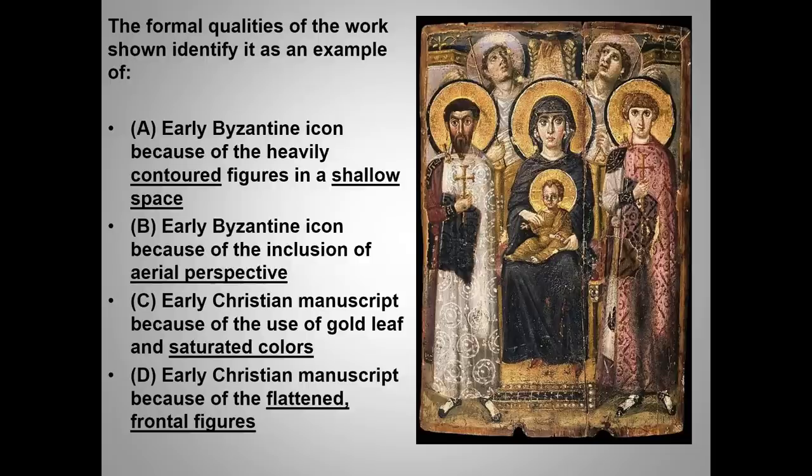The key to answering this question both quickly and accurately is just to remember that the Theotokos and Child is a Byzantine icon. It was created with encaustic on wood — pigment mixed with wax. Once you have recognized that the work is Byzantine and an icon, then only choices A and B become possible. Aerial perspective is used for deep spaces, and we don't see deep space here, so A is an easy choice.